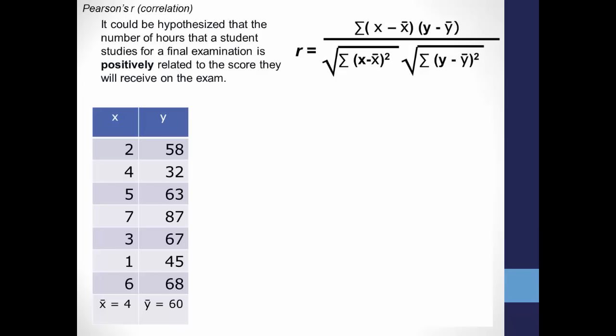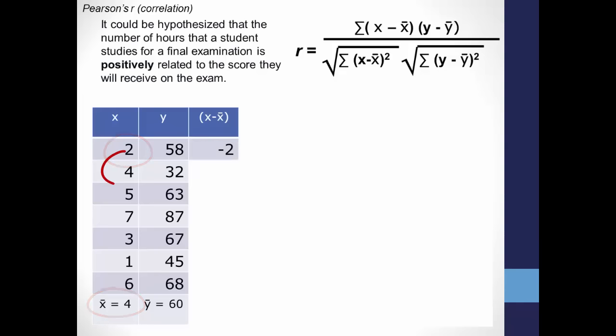Look at the numerator of the formula: the sum of each score in the group minus the group mean. You do this for the x variable scores and the y variable scores. Starting with x: 2 minus the mean of x, which is 4, equals negative 2. Then 4 minus the mean of x, 4, equals 0. Continue doing this for all the scores in the x group.